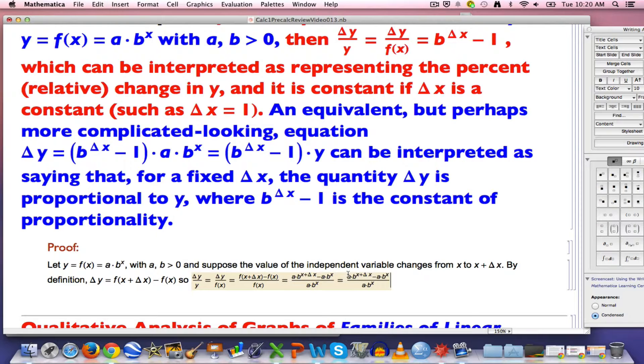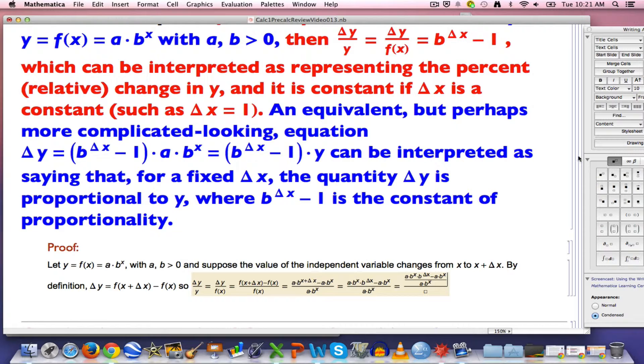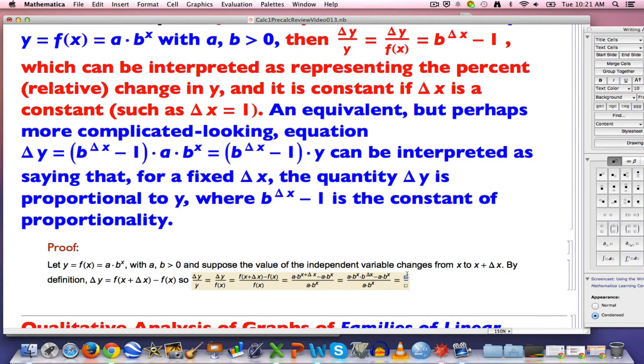Now use algebra. Copy and paste this. B to the X plus delta X power is the same as B to the X times B to the delta X power. That's a basic law of exponents. Now use algebra. You see a bunch of A times B to the X's everywhere. Factor that out of the numerator. It's in both terms.